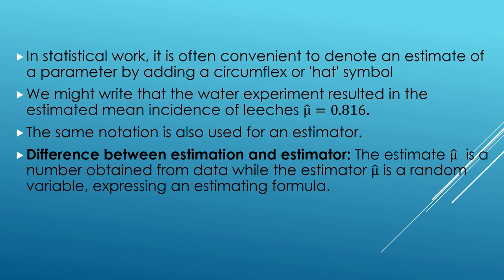In statistical work, it is often convenient to denote an estimate of a parameter by adding a circumflex or hat symbol. This hat symbol tells us that the parameter is estimated — it is not the exact value but the estimated value. For example, the water experiment resulted in an estimated mean incidence of leeches: μ̂ = 0.816. The same notation is also used for an estimator.